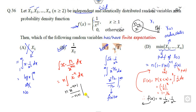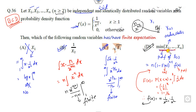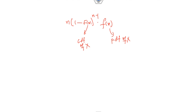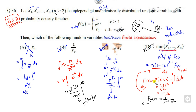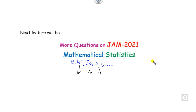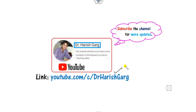Integrating n times x^(−n) gives n/(−n+1) evaluated from 1 to infinity. Since n is greater than 2, the power is negative, so the infinity term is zero and the value at 1 gives a finite answer. Therefore this option is also correct. The right answers are B, C, and D. The key step is finding the PDF of the order statistic using the formula n(1 − CDF)^(n−1) times the PDF of x.